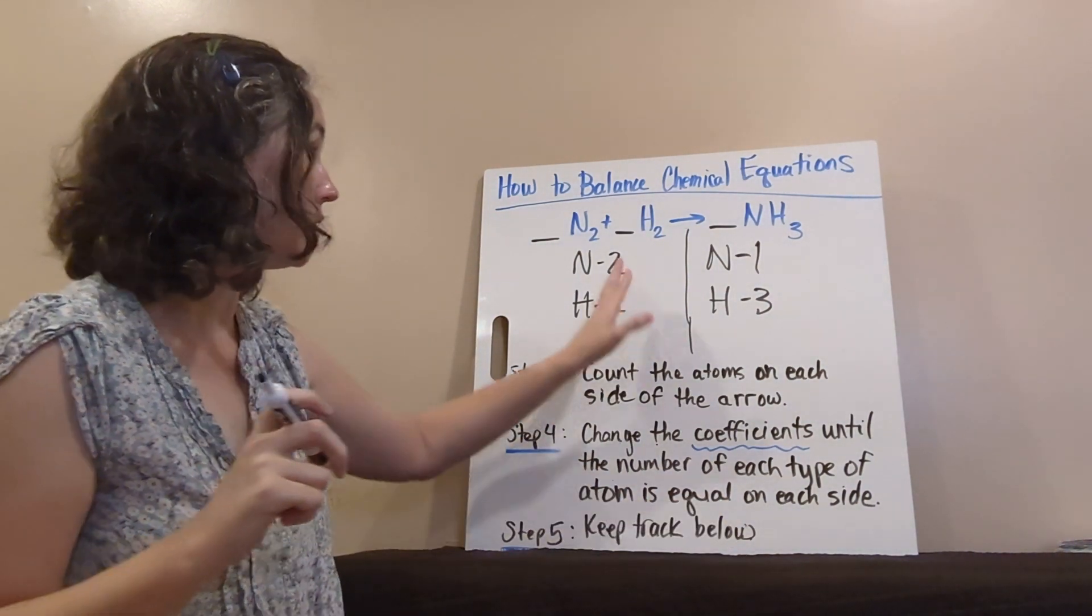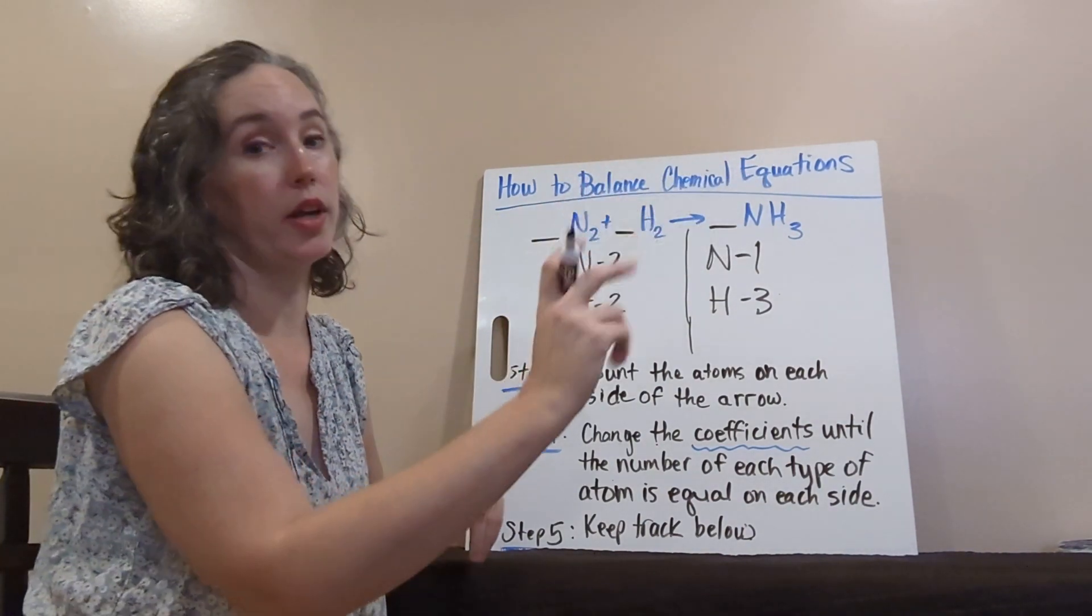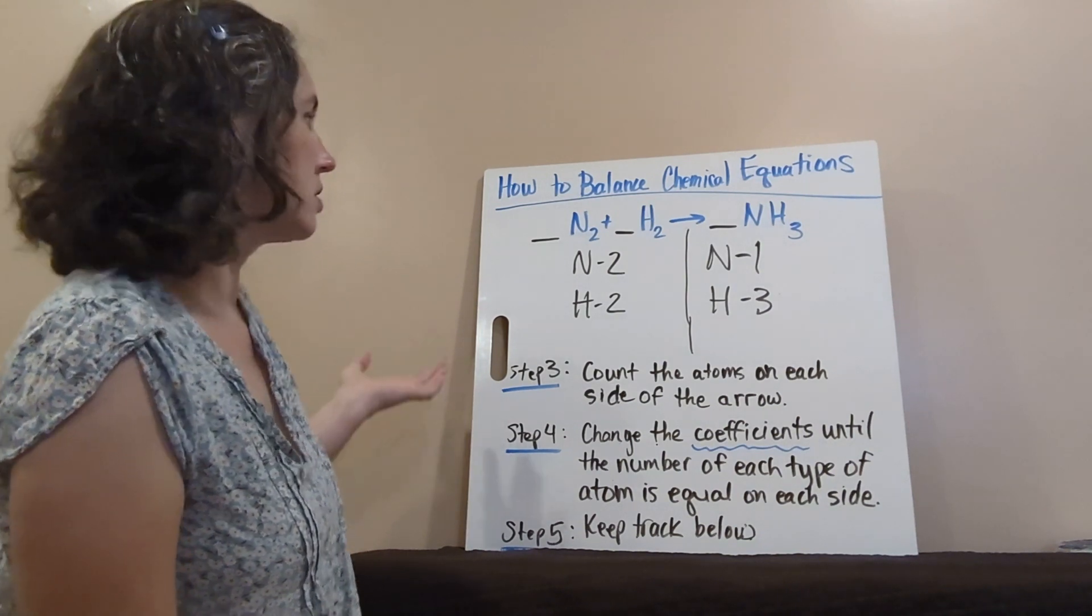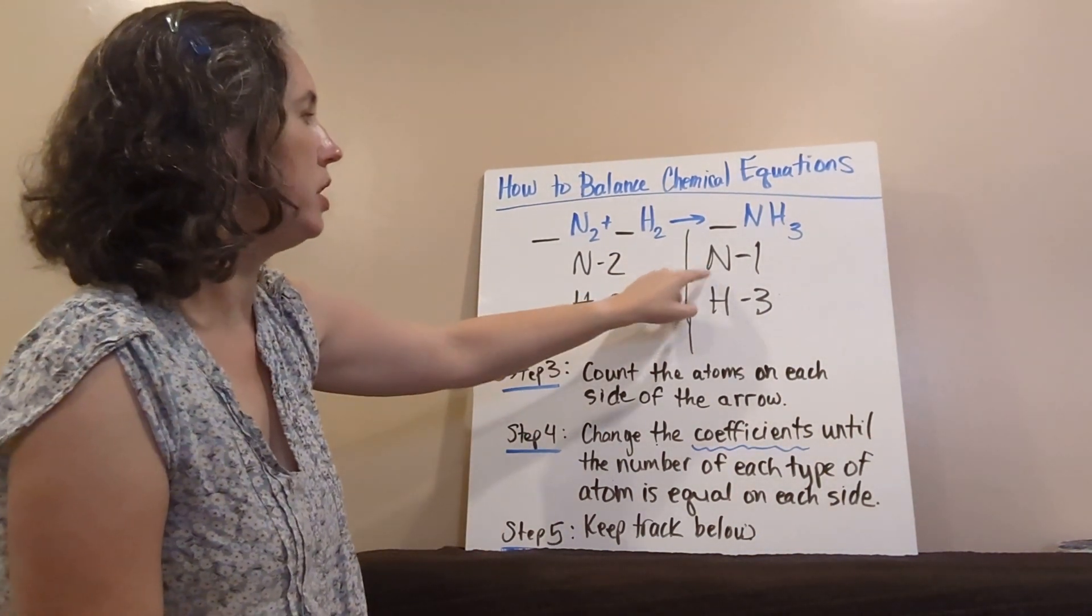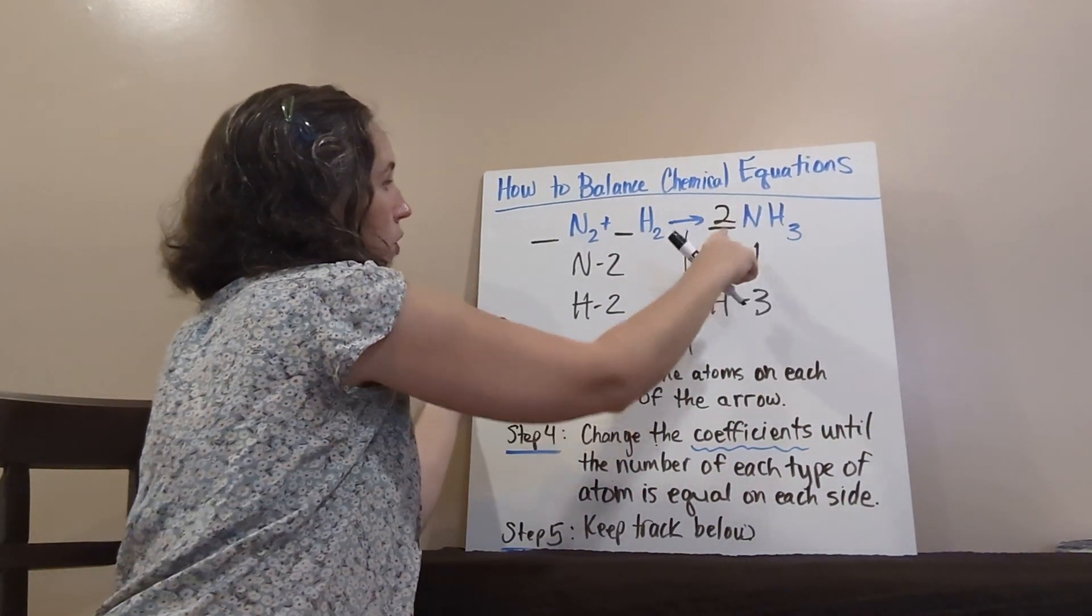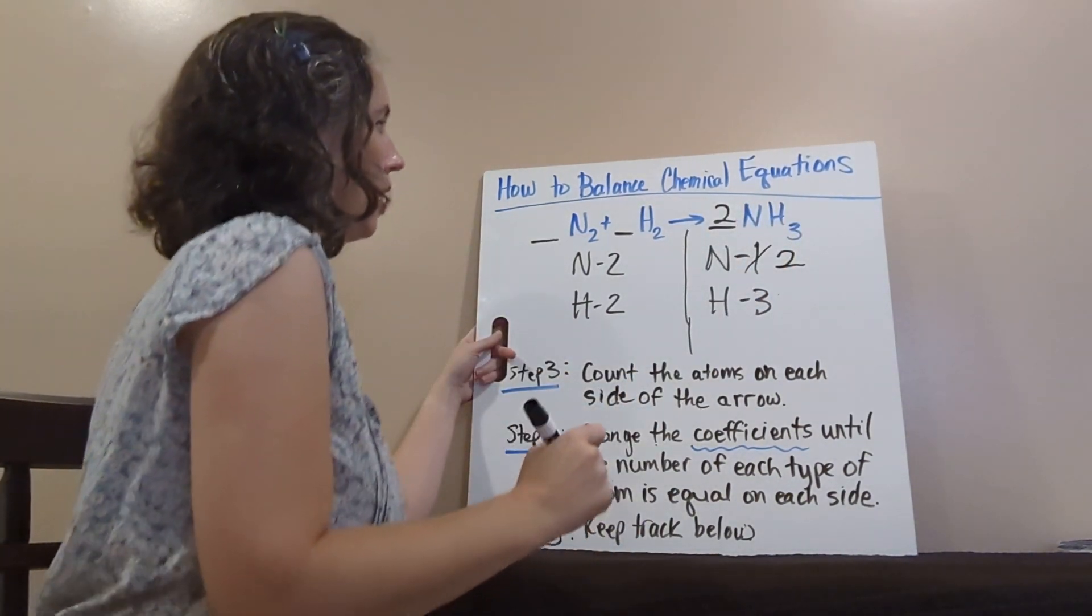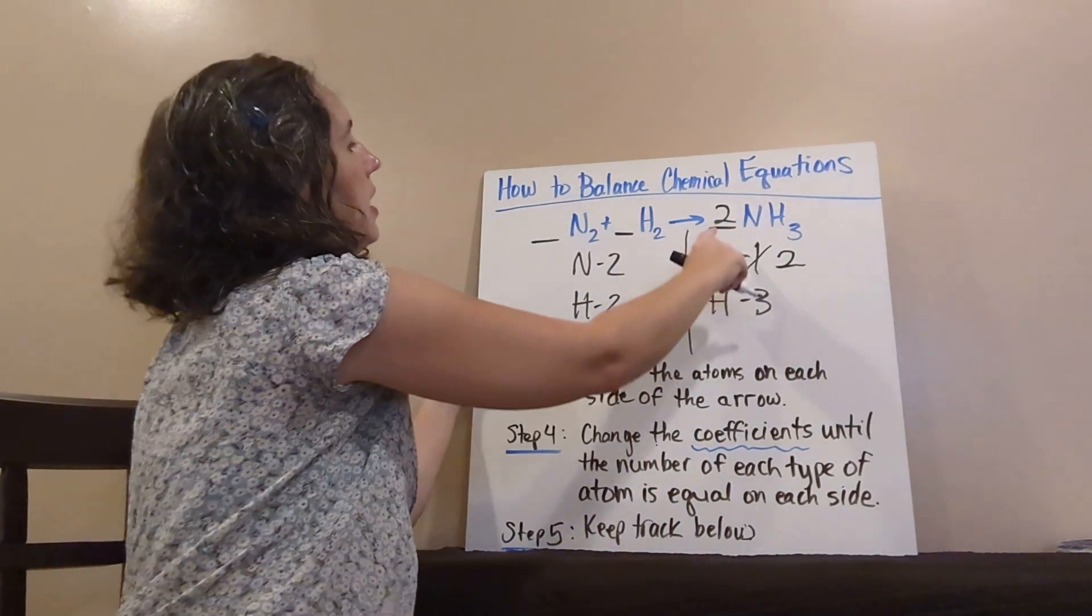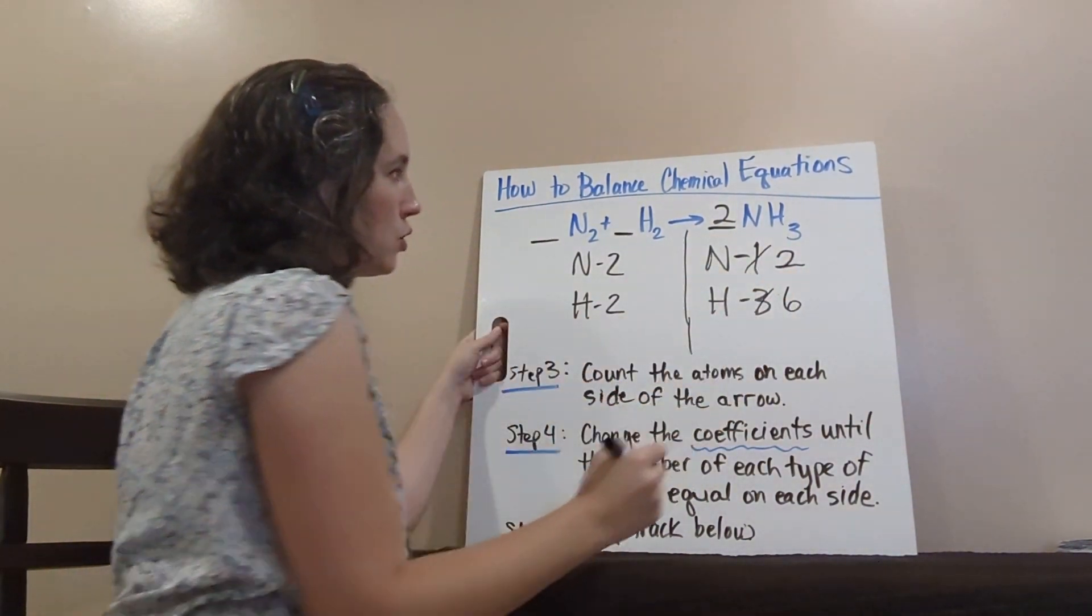You wanna keep track below to help remind yourself where you are and where you came from. So, let's see, I can start with my nitrogens. I have two nitrogens here, but only one here. So, I can add a two in front, and now I have two nitrogens. Hydrogens, but hydrogens have also changed. Now, I have two times three is six hydrogens.